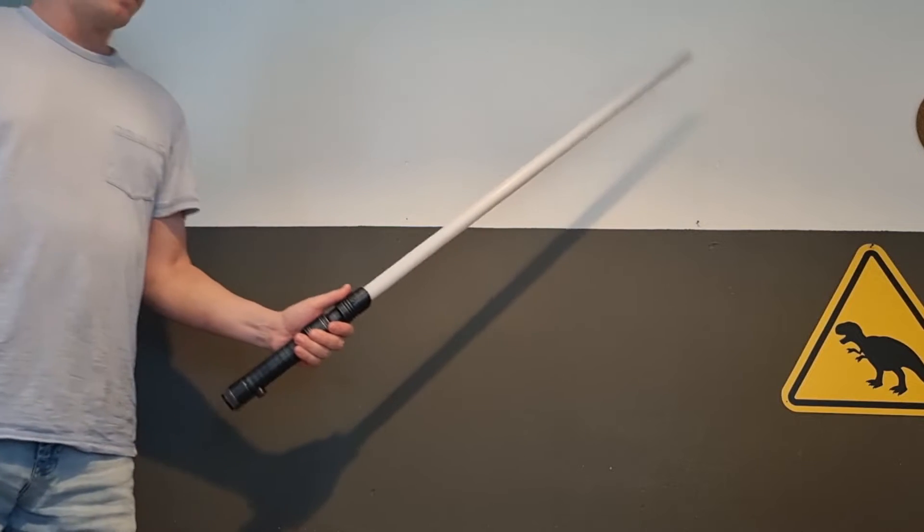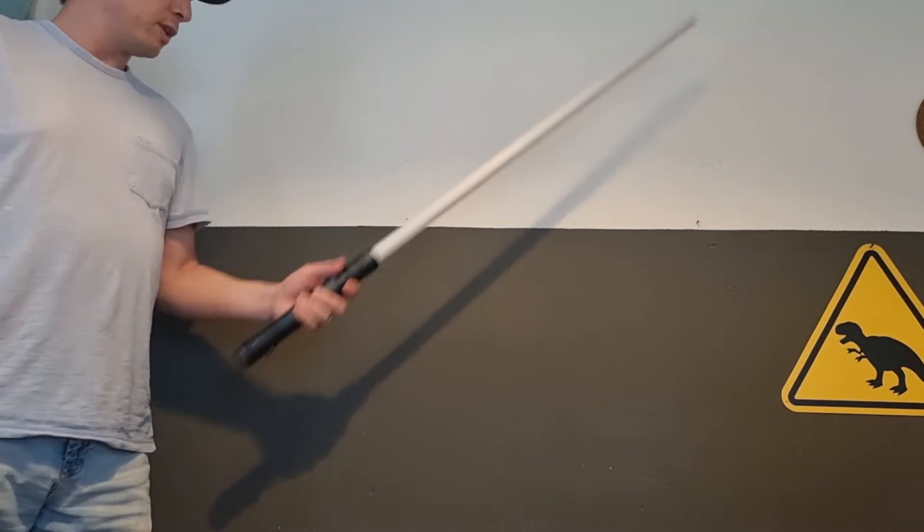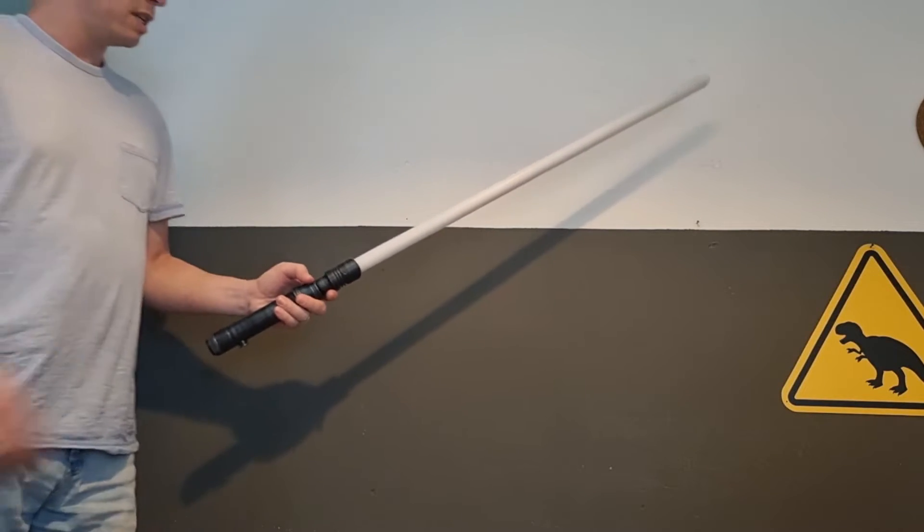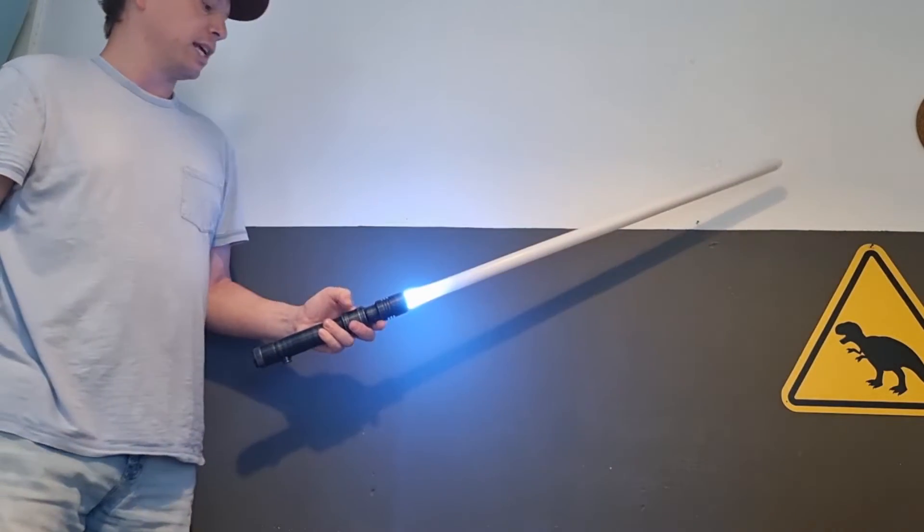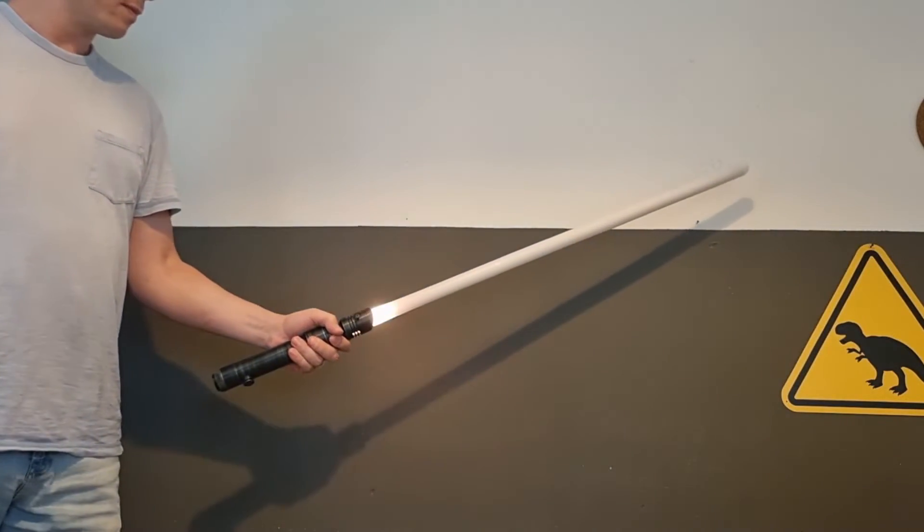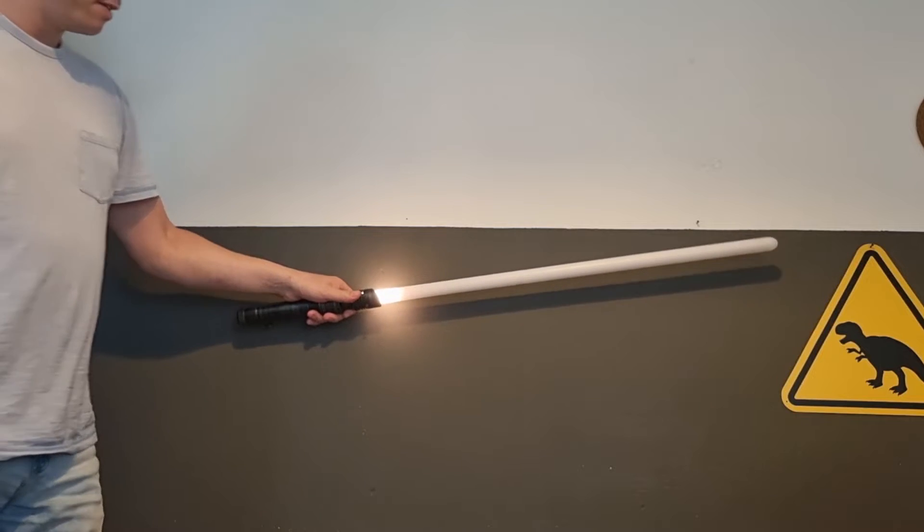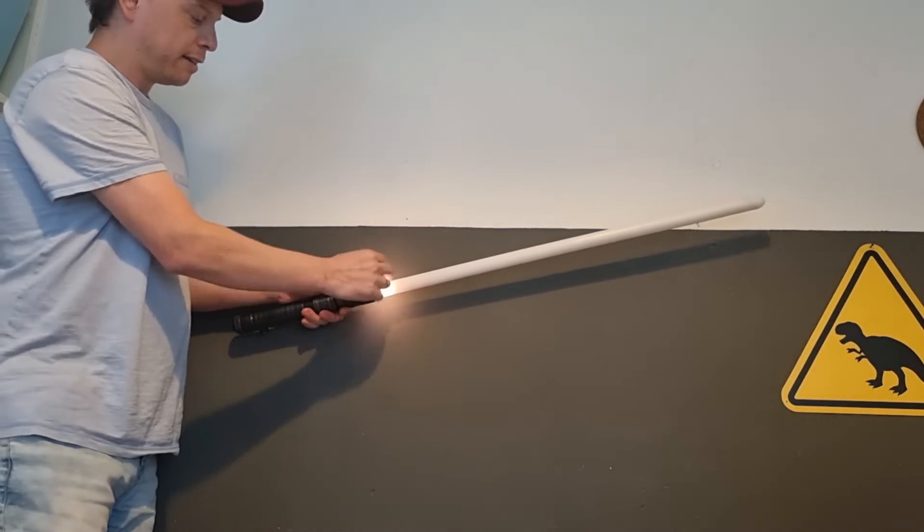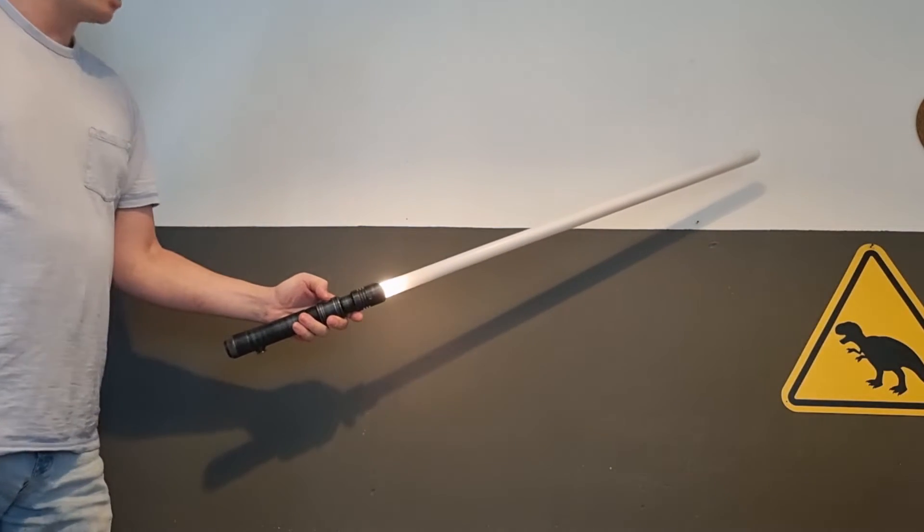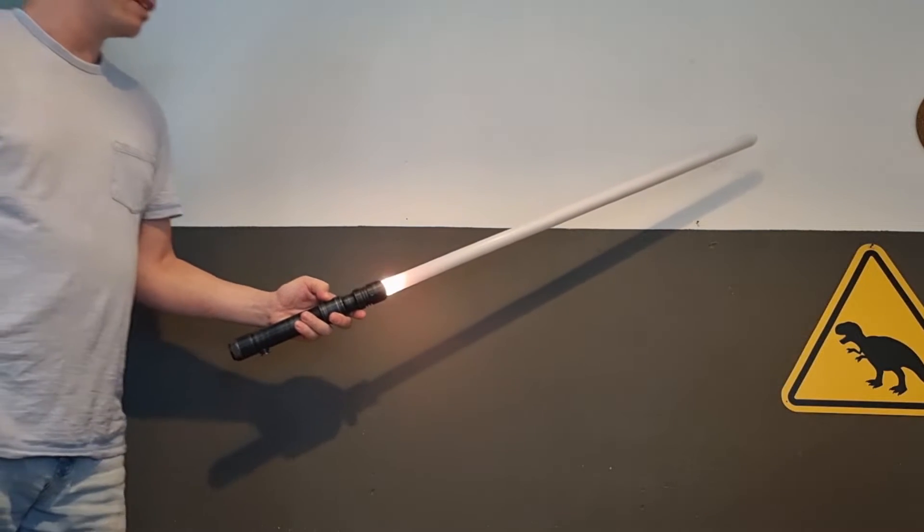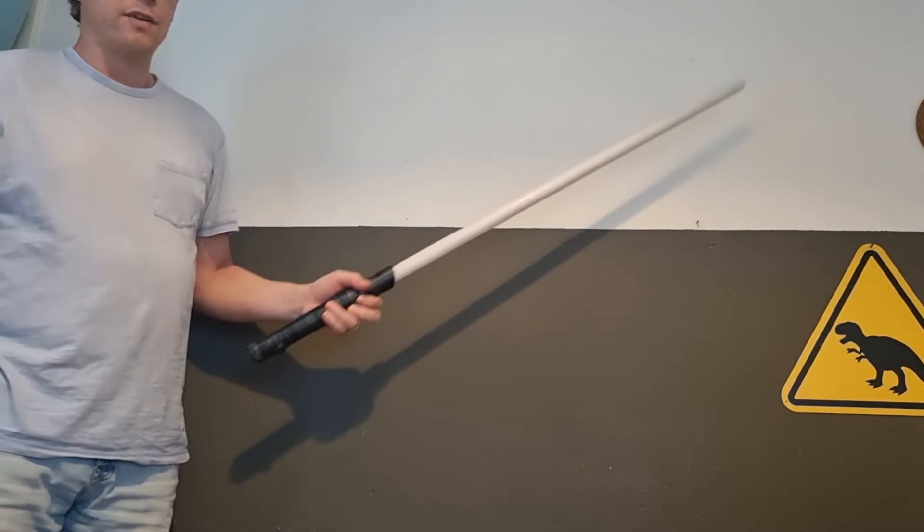If you're starting on the default package and you ignite your blade, the first thing that you will see is that it will only ignite partially. Just like you see here, it will only ignite the base of the blade, and this is because the LED strip setting of the default package is set very low.